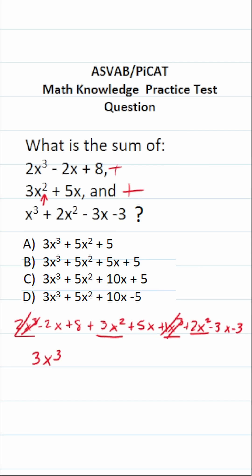3x² + 2x² is going to be 5x². So now that we've combined those, let's go ahead and cross them out.